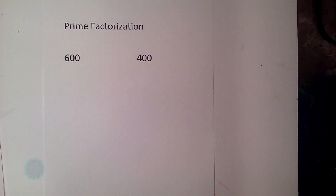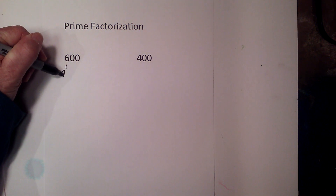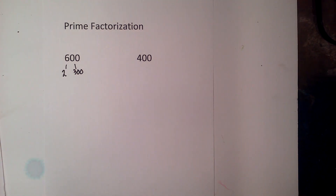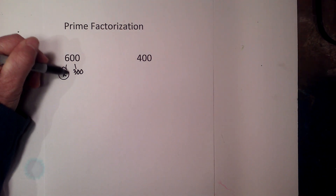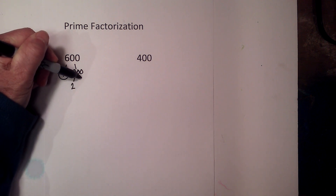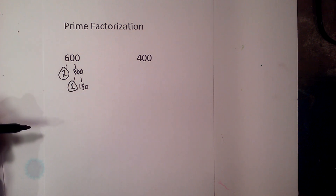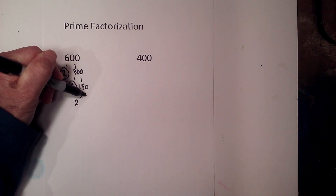In this math and science video, we'll find the prime factorization of 600 and 400 using a factor tree. Starting with 600: 2 times 300 — circle the 2 because it is prime. Then 2 times 150 equals 300 — circle the 2 because it is prime. Then 2 times 75 equals 150 — circle the 2 because it is prime.